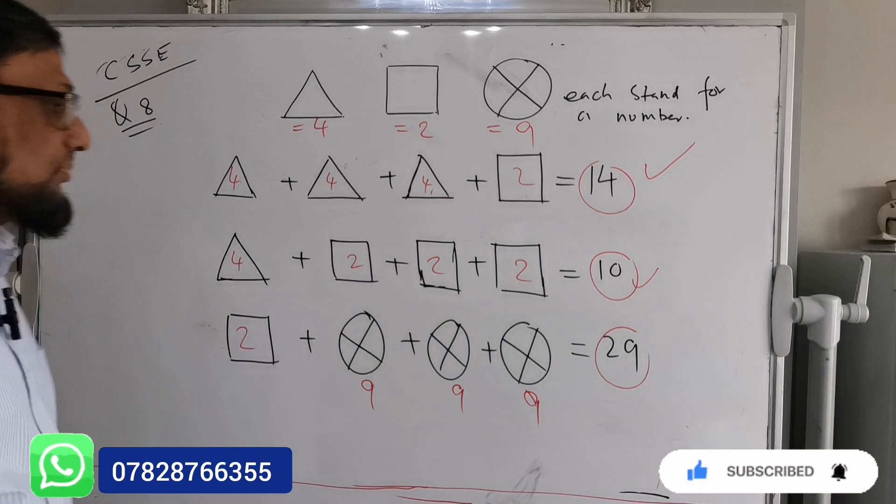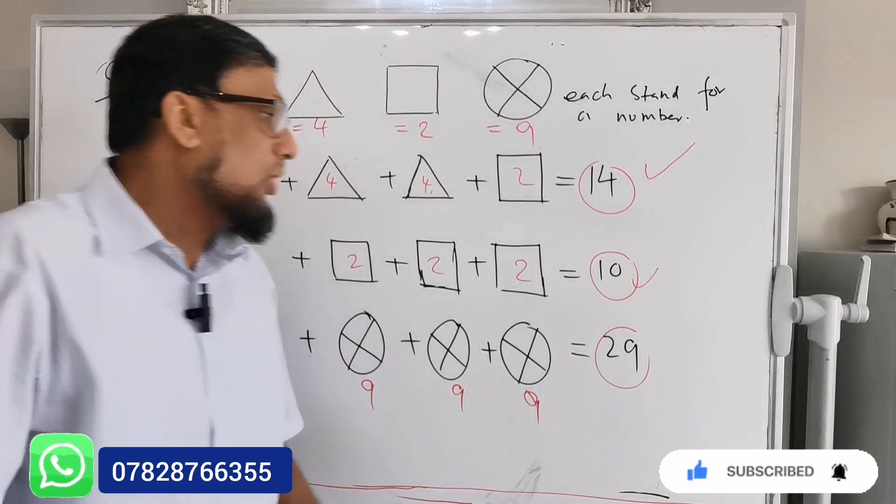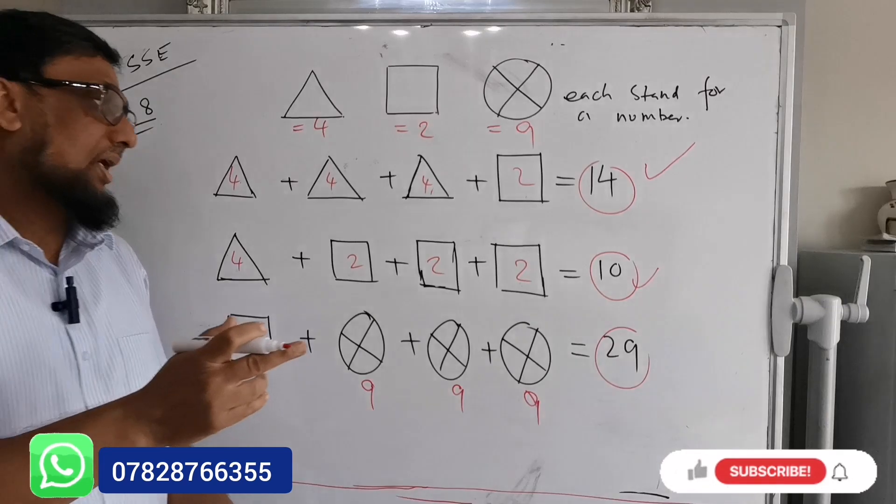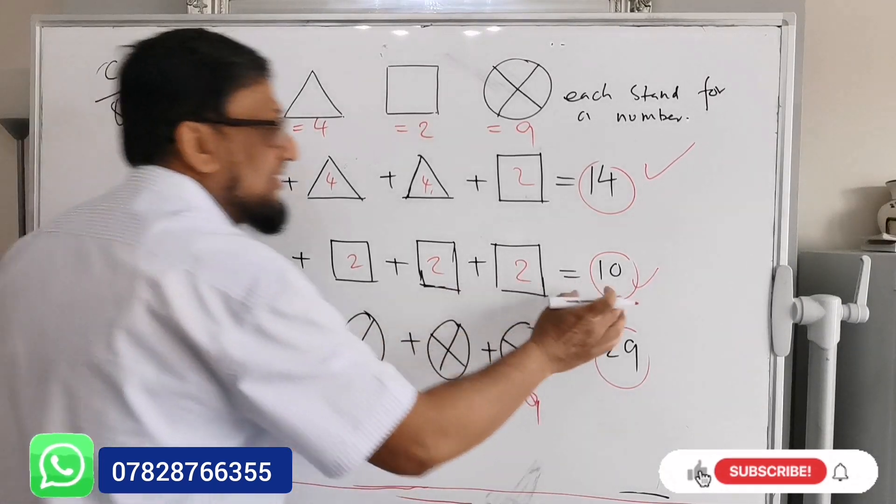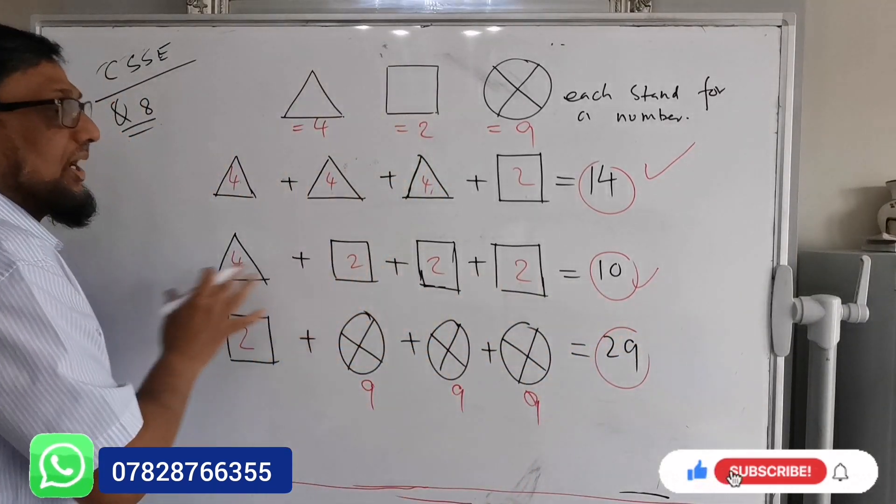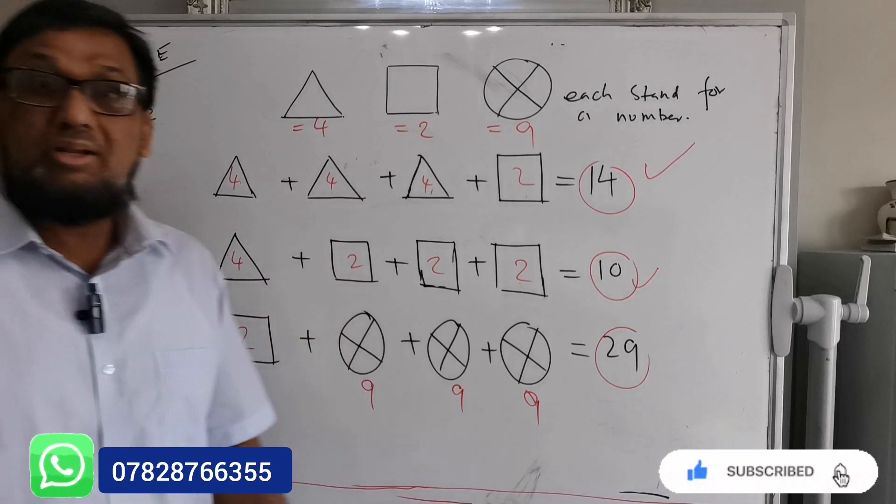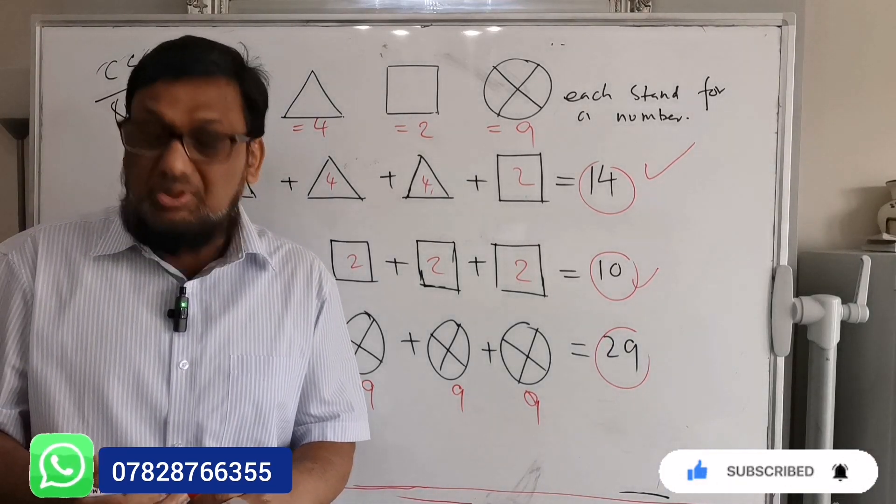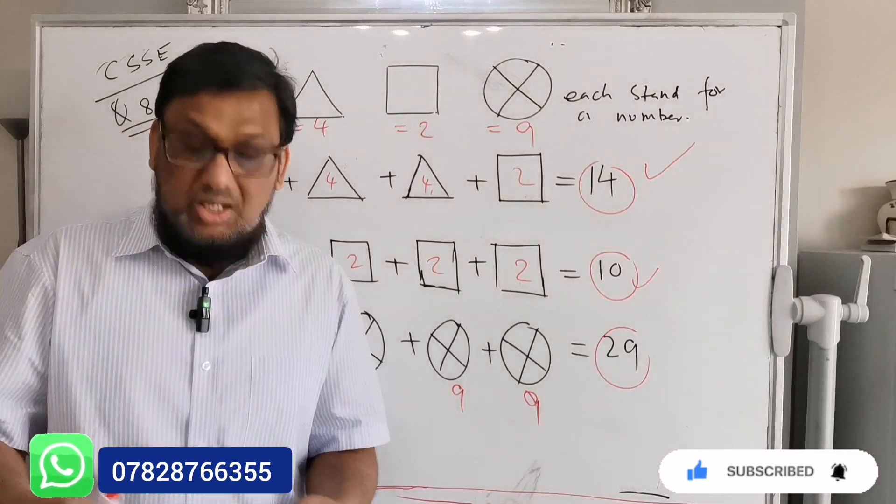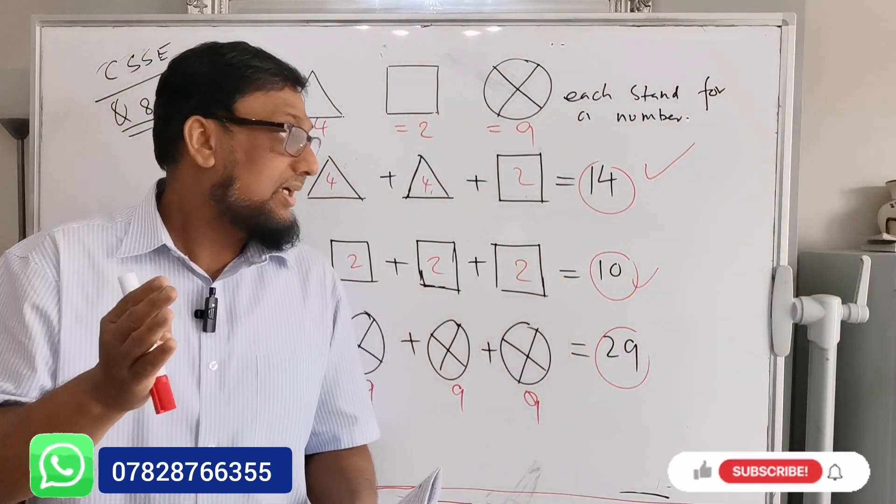That's it, very simple, very easy. Always remember one thing: always try with the lowest number. That's it for today. Very easy, very simple question, but it's a bit tricky. If you like this video, please like and share with your family and friends who are going to appear for CSSE.